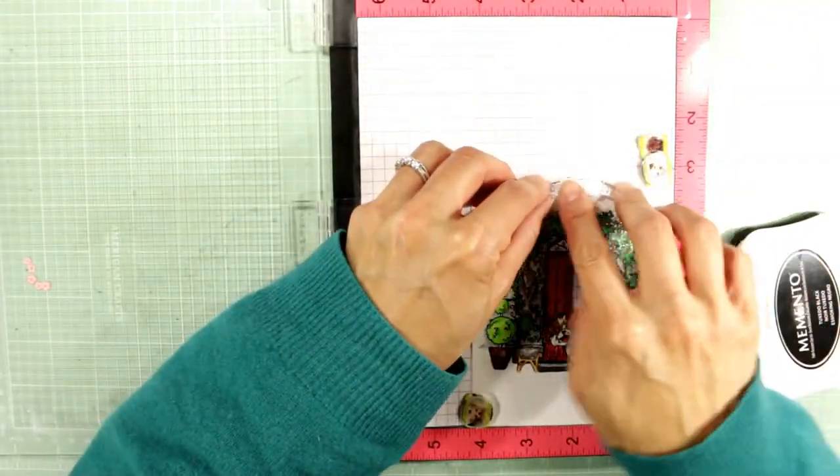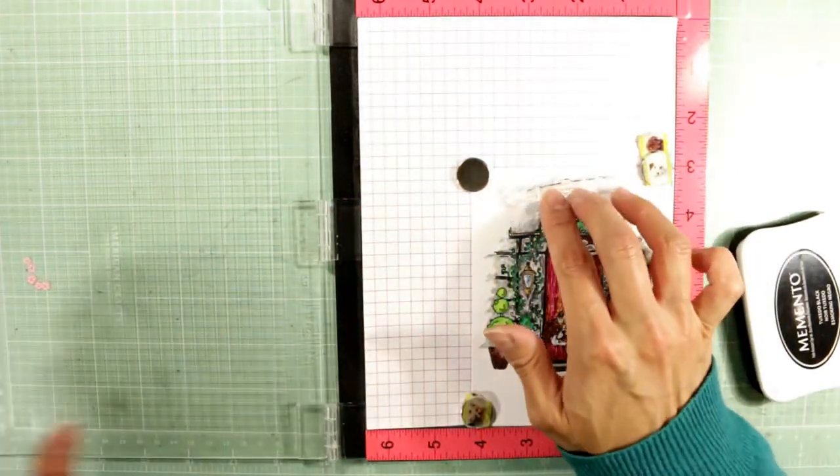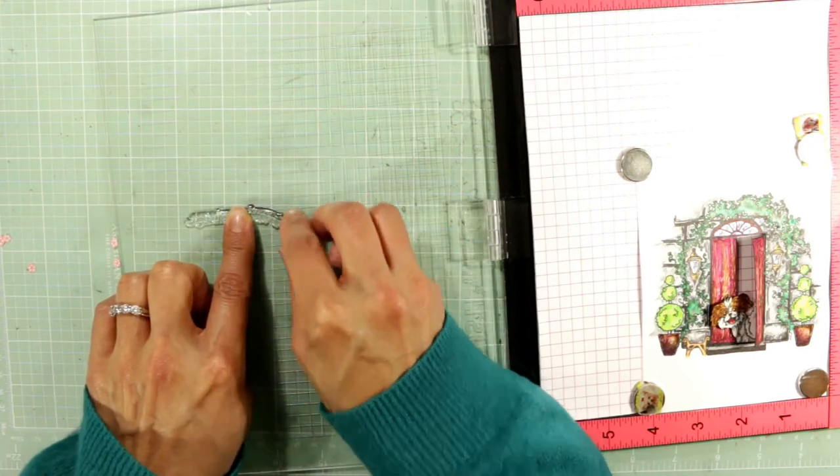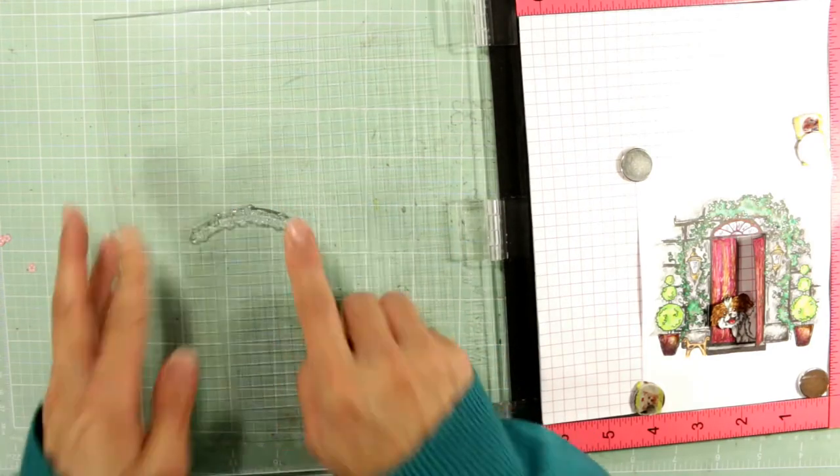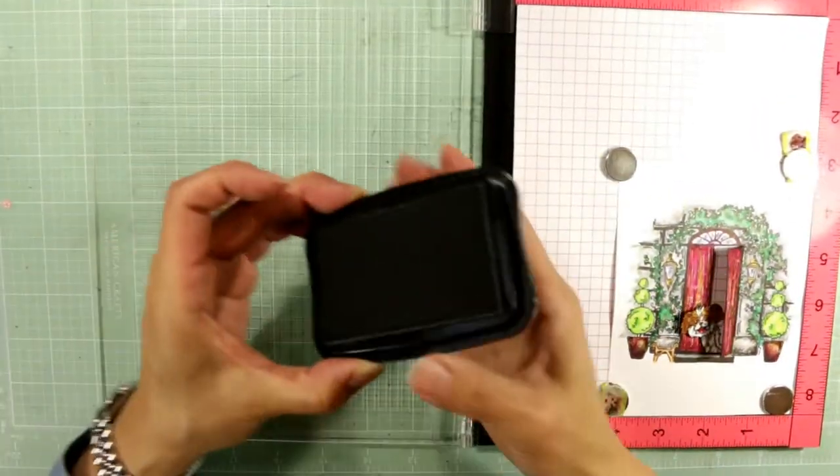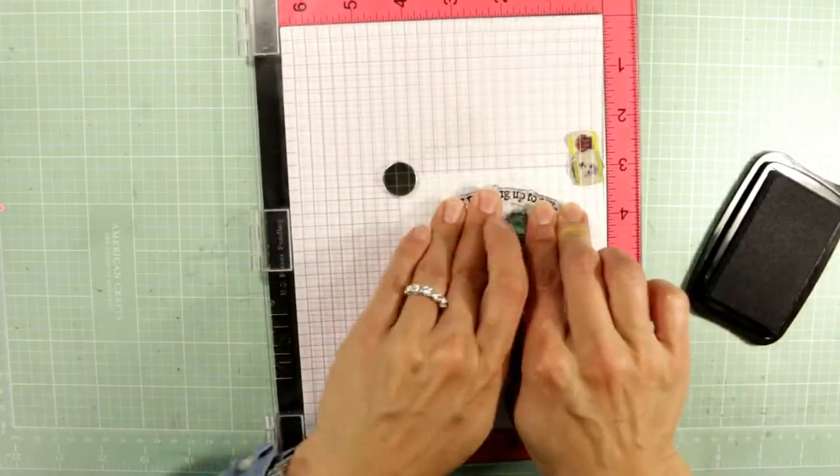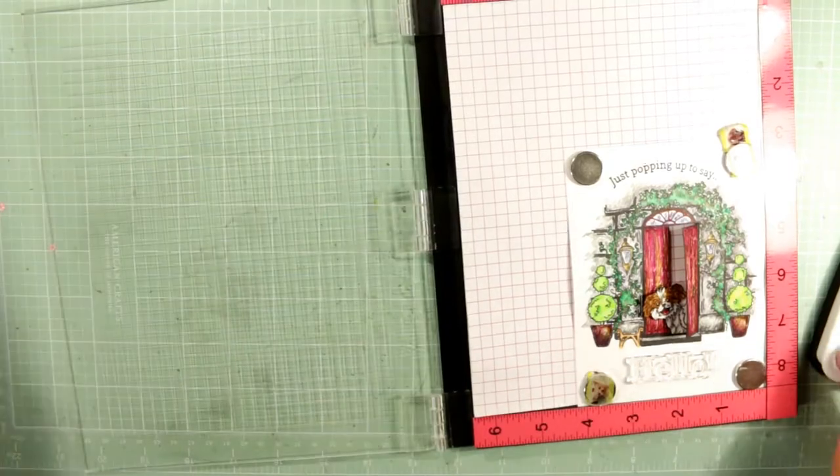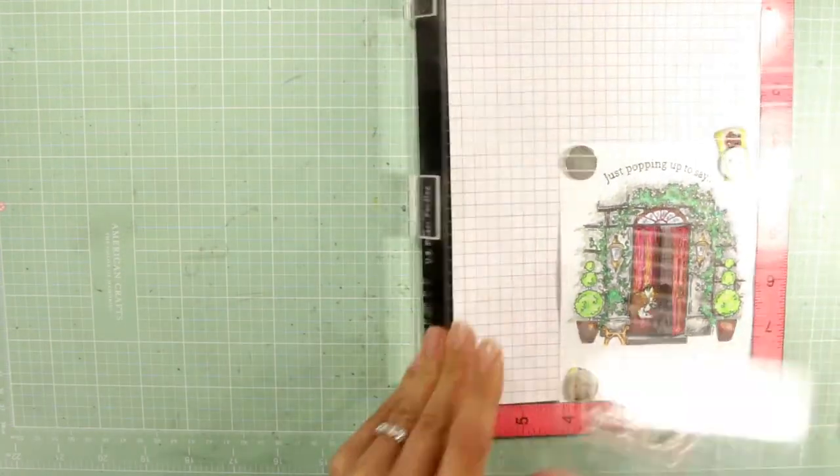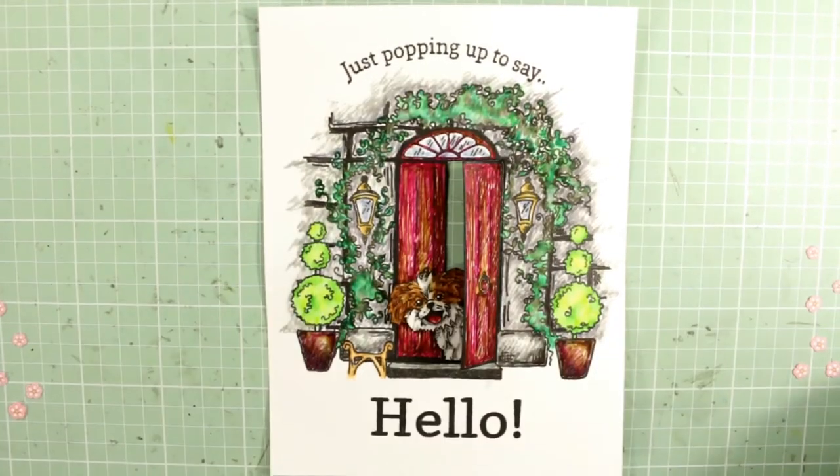Now for the sentiment, I thought this really cute sentiment stamp set from Neat and Tangled called Out of the Box would be perfect. I wanted the curve of the doorway to be echoed in the sentiment so this top sentiment just says just popping up to say and I positioned it on my MISTI tool and then I'm taking the middle portion and then curving each side. I'm using Memento Tuxedo Black ink here and to get a clean impression crisp I wanted to stamp it out a couple of times. And then at the bottom here I'm stamping out the big hello exclamation point that's also from the same Neat and Tangled Out of the Box stamp set.